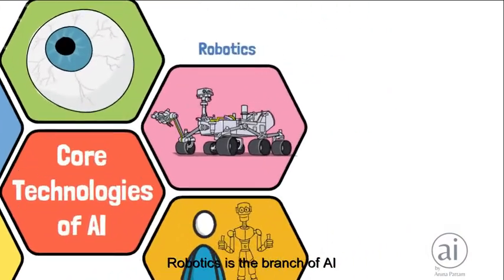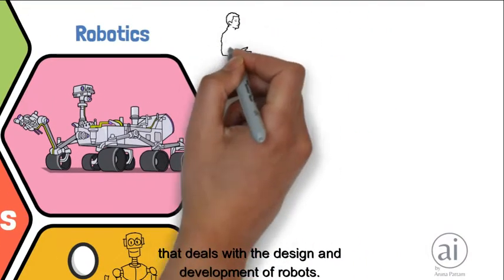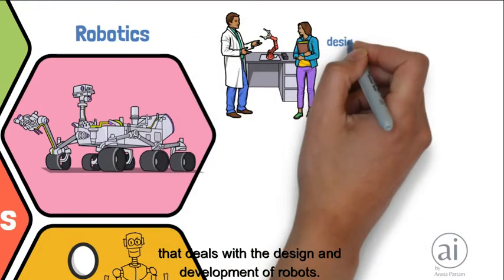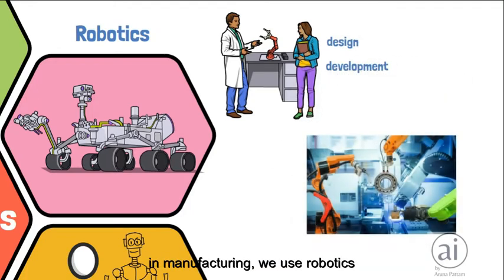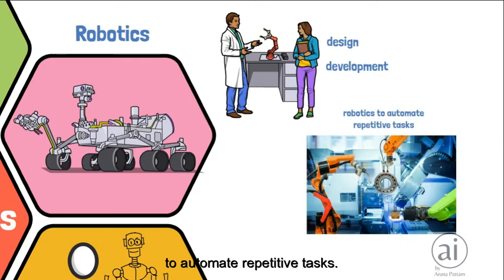Robotics is the branch of AI that deals with the design and development of robots. For example, in manufacturing, we use robotics to automate repetitive tasks.